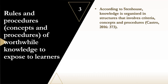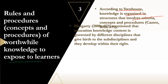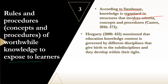Rules, procedures, and concepts of worthwhile knowledge to expose to learners: according to Stenhouse, knowledge is organized in structures that involve criteria. We need to know the specific concept, and it needs to follow a specific pattern and process. Educational knowledge is governed by different disciplines, and each discipline gives birth to sub-disciplines — each has specific rules and you cannot apply one discipline's rules to another.